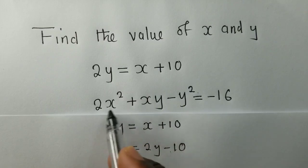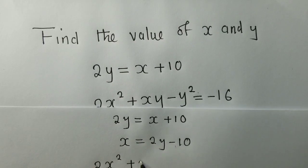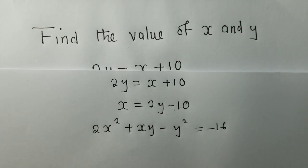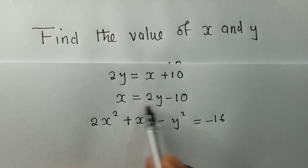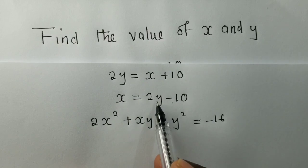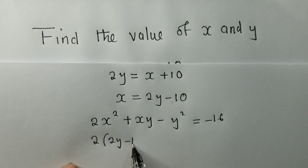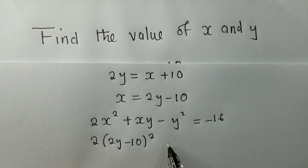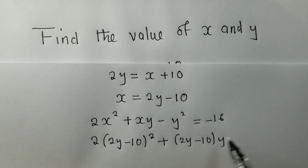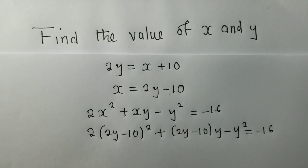Let's copy the next equation: 2X² plus XY minus Y² is equal to negative 16. Since we have made X the subject of the formula, we are going to substitute. Wherever we see X, we put 2Y minus 10. So we have 2(2Y minus 10)² plus (2Y minus 10)Y minus Y² is equal to negative 16.